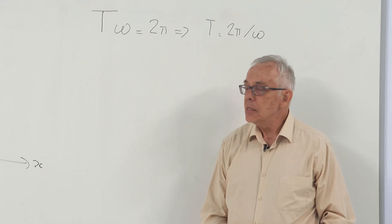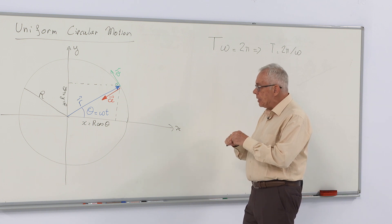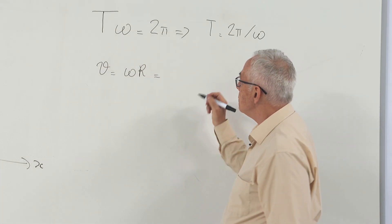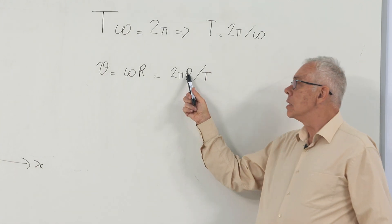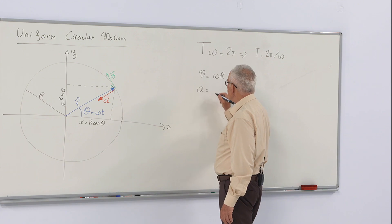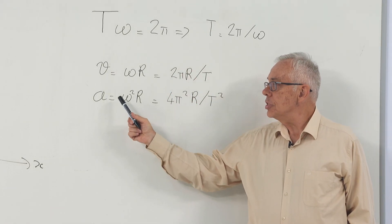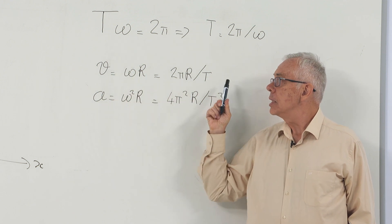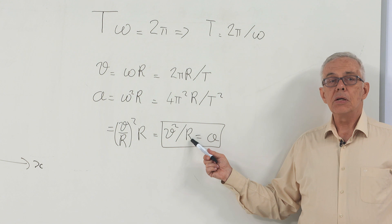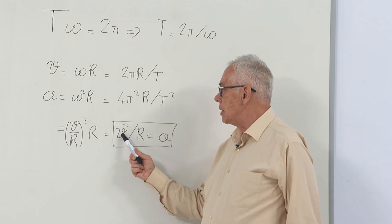We will then look at velocity in terms of the period T. The speed, or magnitude of velocity, is omega r, which equals 2 pi r divided by the period T. The magnitude of the acceleration is omega squared r. And finally, we obtain a relation between acceleration, velocity, and radius without the period: the magnitude of acceleration is v squared over r.